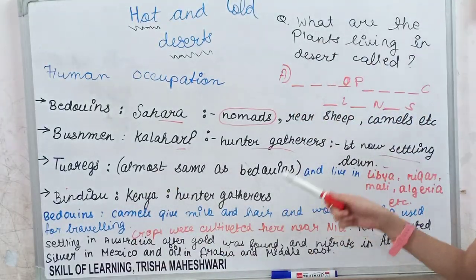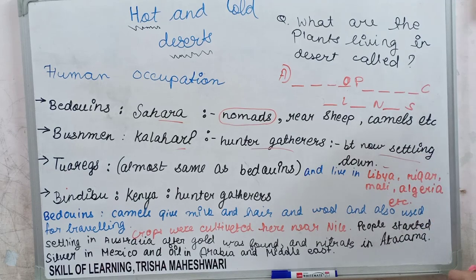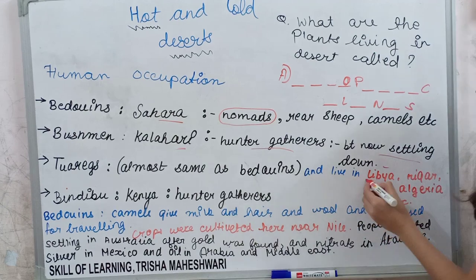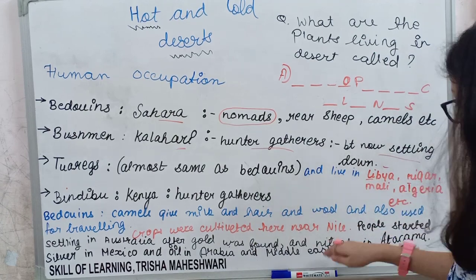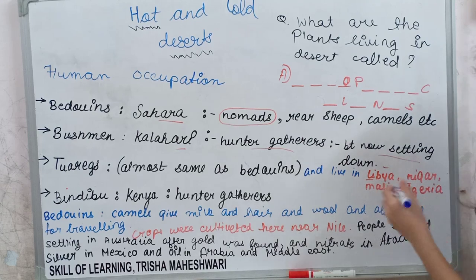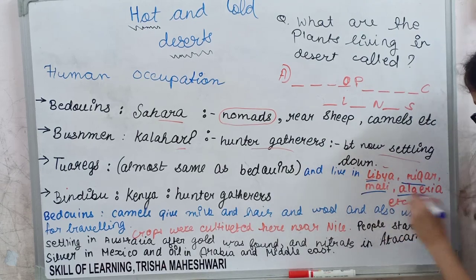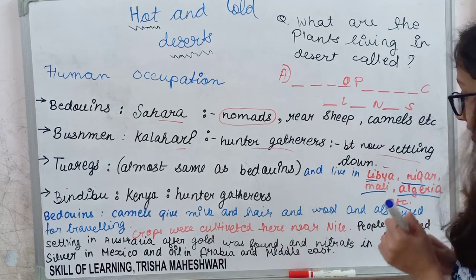Tuaregs are almost the same as Bedouins — they were nomads and sometimes chiefs. They are in the Sahara Desert, specifically in Libya, Niger, Mali, Algeria, and so on. These are the areas they cover.